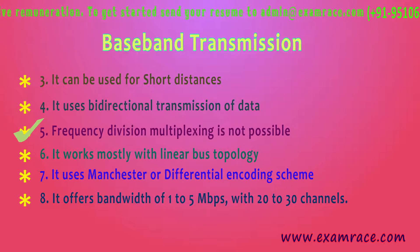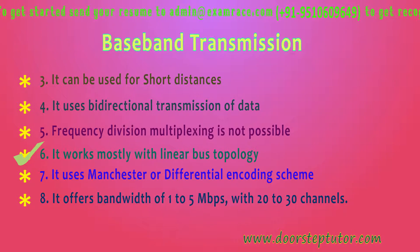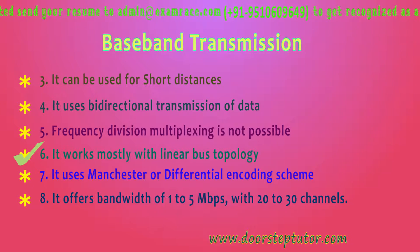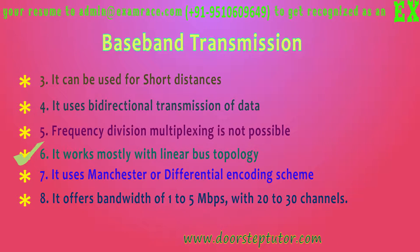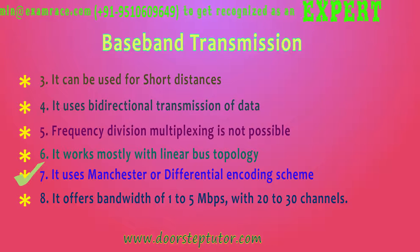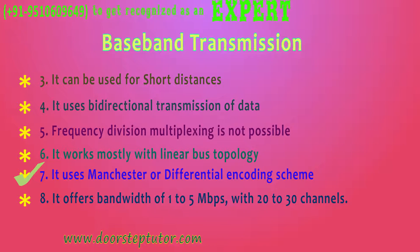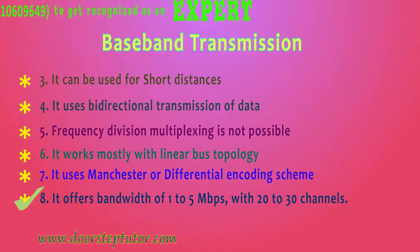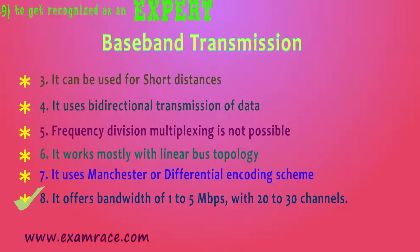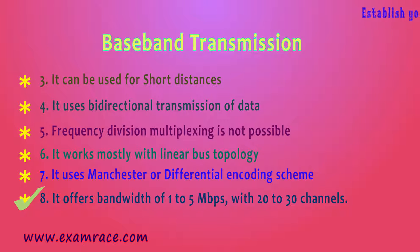The next point is it works mostly with linear bus topology, which we can also understand from the diagram. It uses Manchester or differential encoding scheme — you can refer to our other video on encoding schemes for more detail. It offers a bandwidth of 1 to 5 Mbps with 20 to 30 channels, meaning you can multiply 5 by 30 to get the total possible bandwidth in baseband transmission.